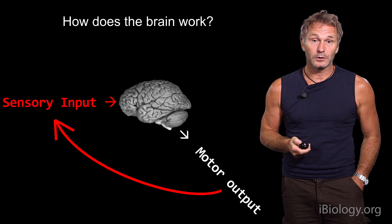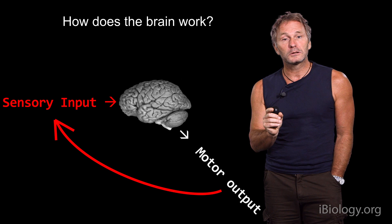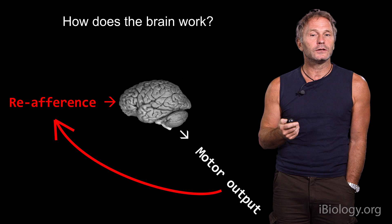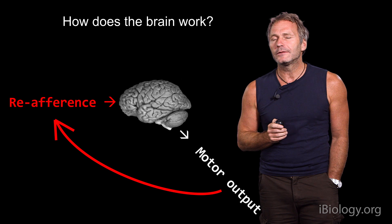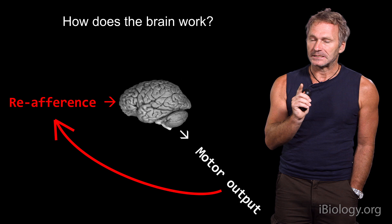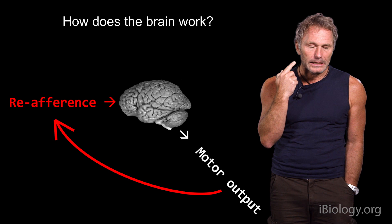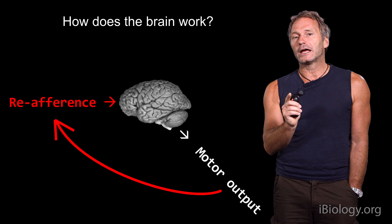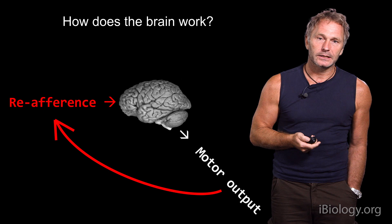There is a form of sensory input called reafference — sensory input not generated by something happening in the outside world, but changes that hit your sensory organs as a consequence of your own action. Your own action, generated by ongoing activity, can generate sensory input where the cause is your own motor action, not an external event. Exafference, by contrast, is input caused by external agents in the world. These two are fundamentally different forms of information.